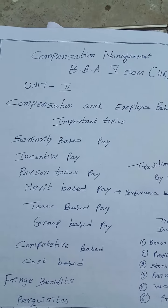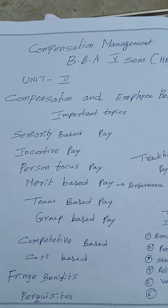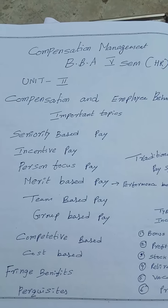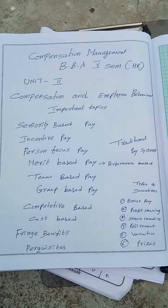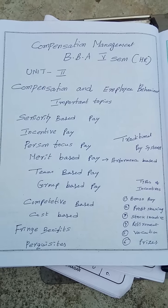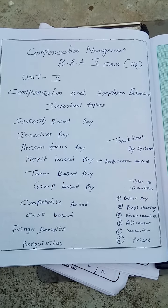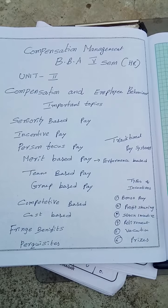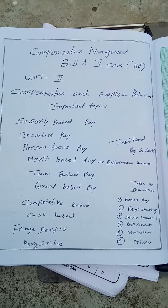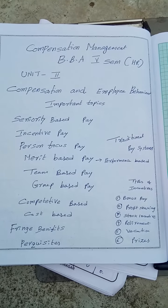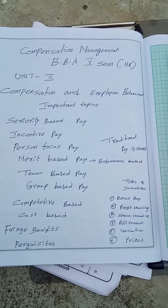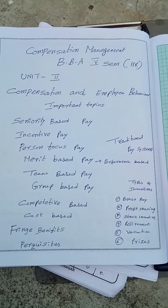One important element is person-focused pay. Under person-focused pay, we divide the workforce into three categories: skilled workers, semi-skilled workers, and unskilled workers. On the basis of skill, we divide workers whether they are skilled, semi-skilled, or require more training. On that basis, we fix some kind of pay for them. It also has its own merits and demerits.